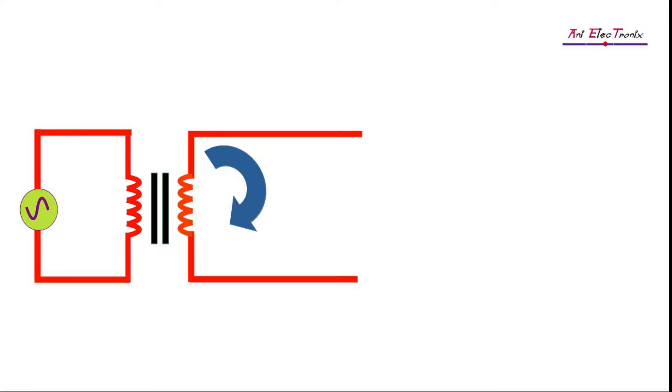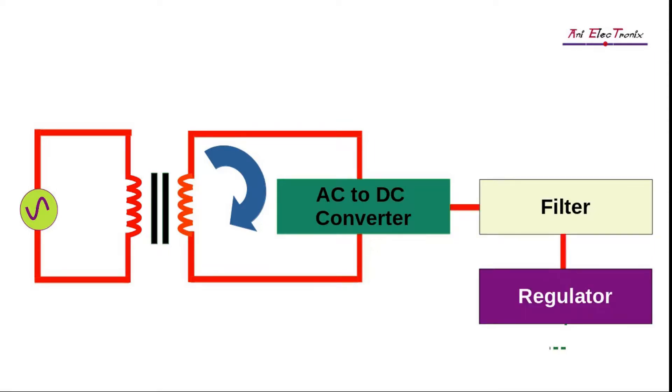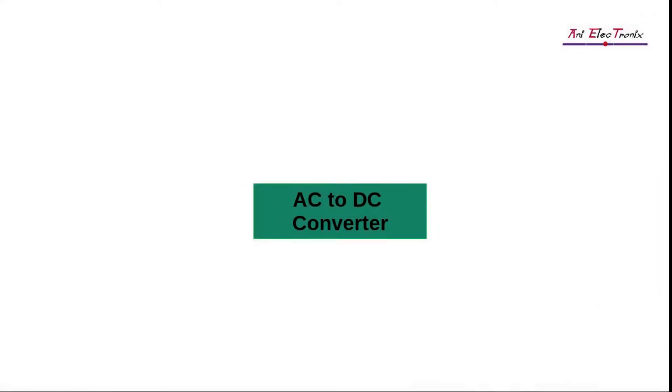Let's look at a few important points very carefully. Upon stepping down the power line voltage, an electronic circuit is required that converts the AC voltage into DC, filters the DC part from AC, and regulates the output DC voltage. Rectifiers are the first component in this circuit that converts AC to DC voltage.